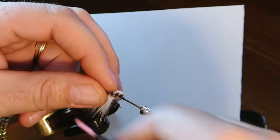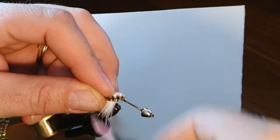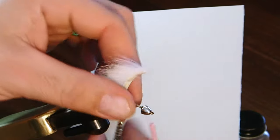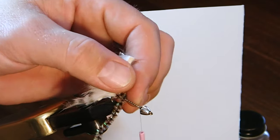And then we'll just tie that into the hook shank, and then just simply, we're just going to take a few wraps, wrap that forward to the bead, and then take your chenille, wrap it forward up the hook shank.